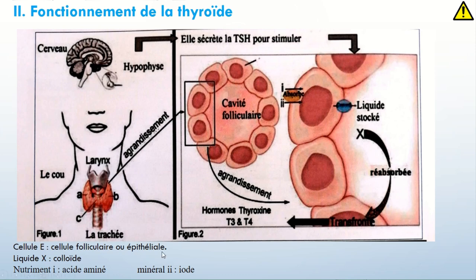Une fois qu'elles vont absorber ces deux substances, elles vont les stocker sous forme de colloïde qui est présente. Cette colloïde, c'est une substance gélatineuse qui est riche en protéines iodées. Elles vont la garder en stock.